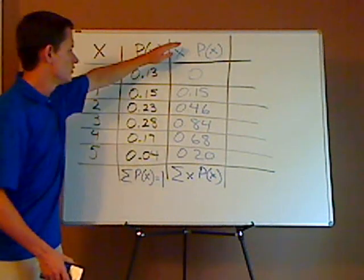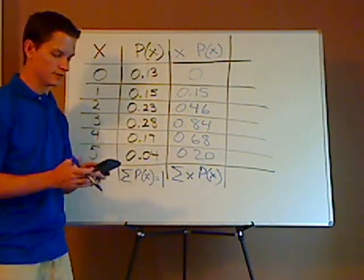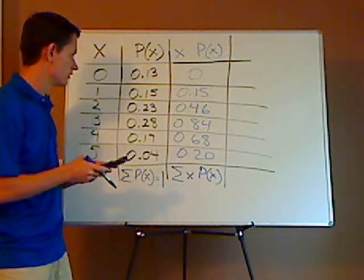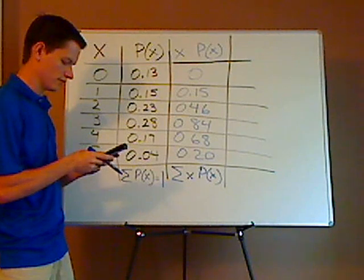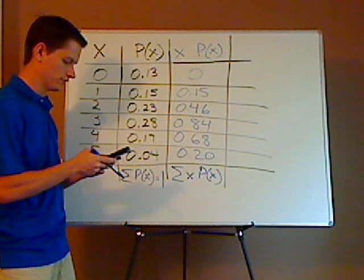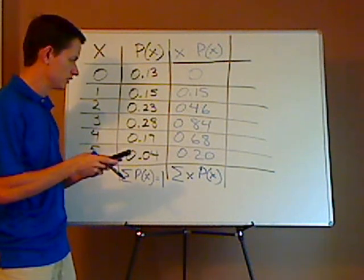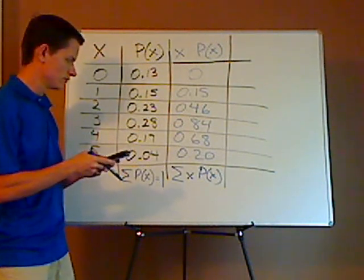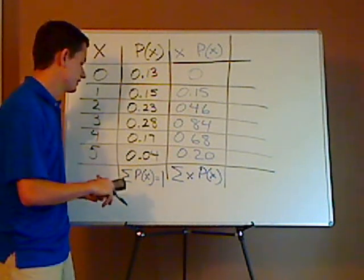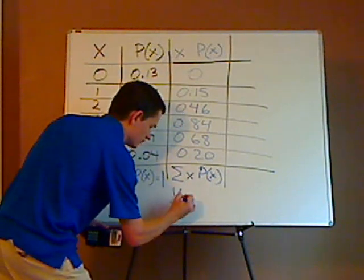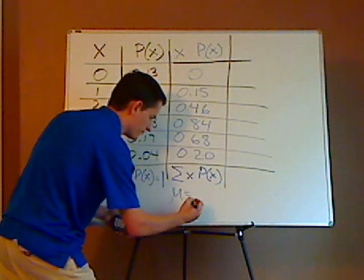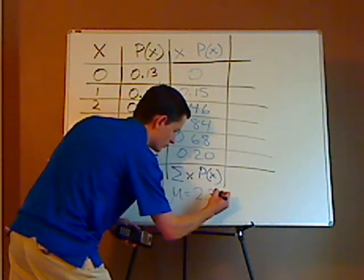And so your next step would simply just be adding these up, which I can't do in my head. Plus 0.46, plus 0.84, plus 0.68, plus 0.20. And that gives me a mean of, which is this column right here added up, 2.33.